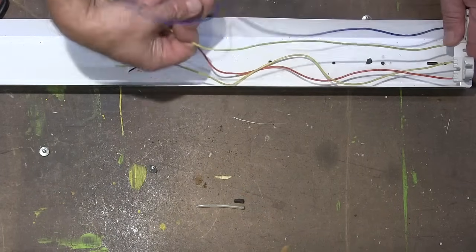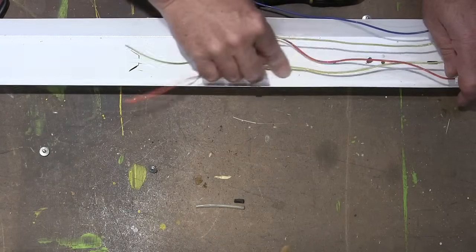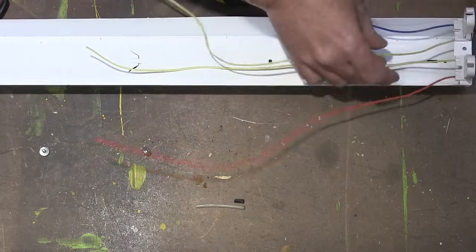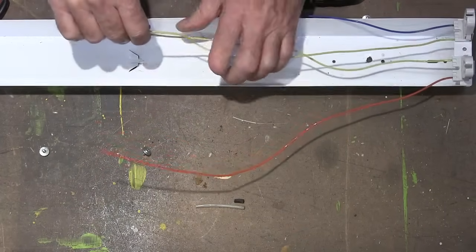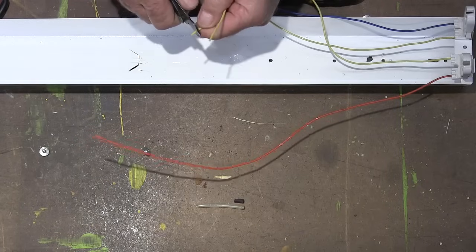You can see there's two wires from each one. It does not matter which wire we connect to what on these. So just take one wire from each tombstone, and you're going to strip it back a little bit.